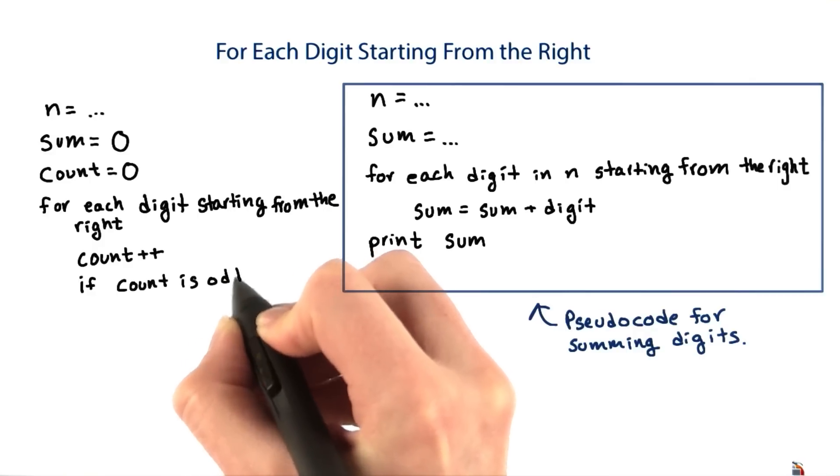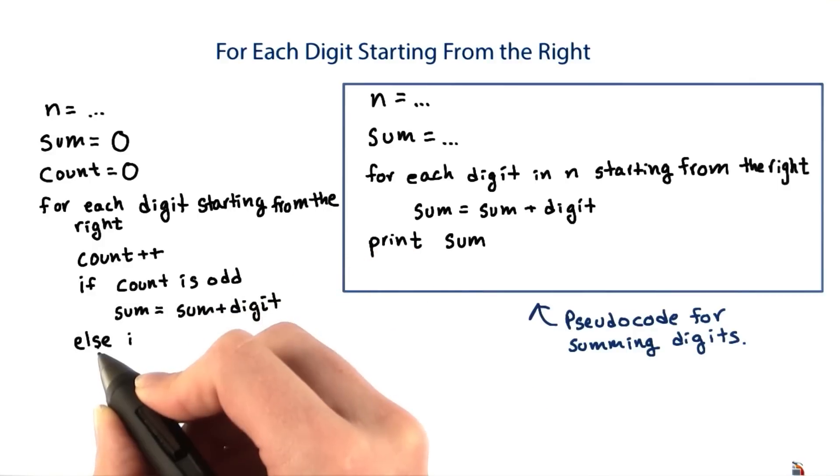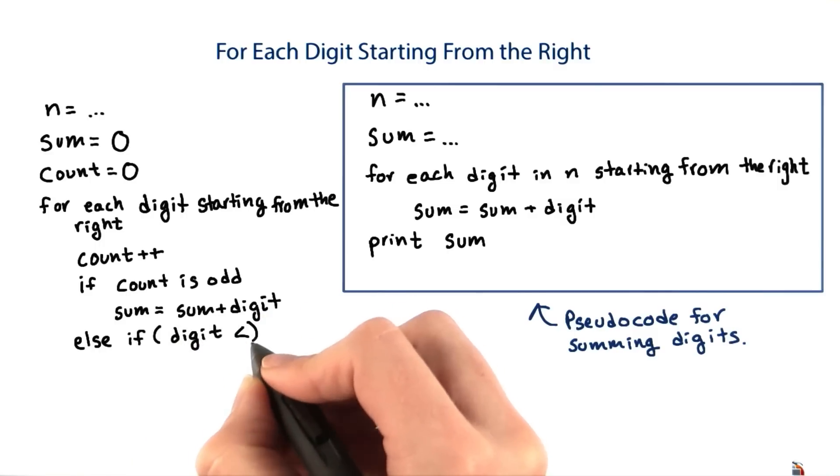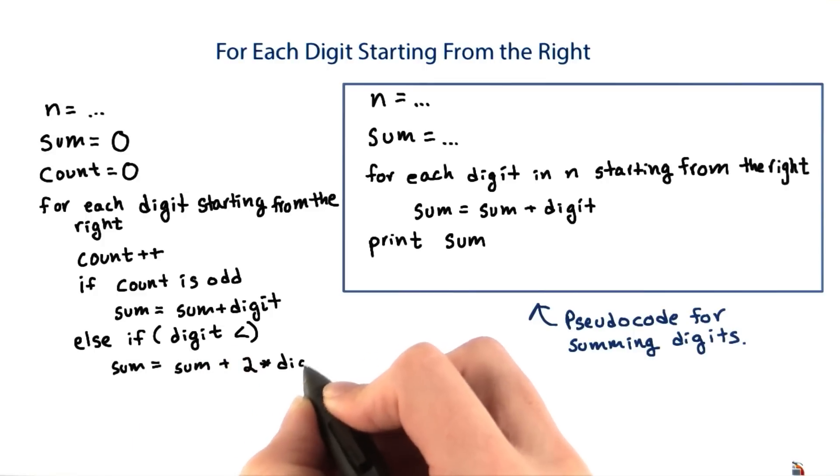If the count is odd, then the digit gets added to the sum. Otherwise, if the count is even, then it matters how big the digit is. If the digit is less than 5, then we add 2 times the digit to the sum.